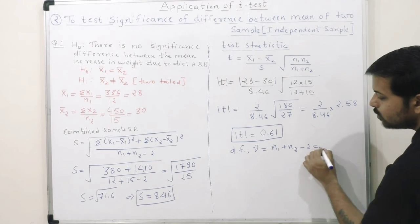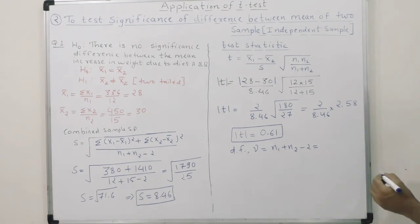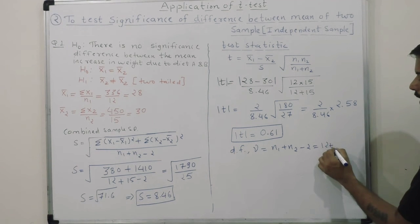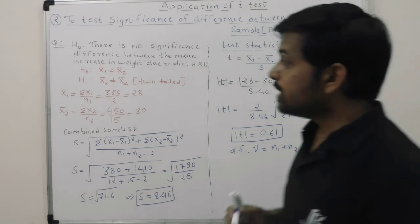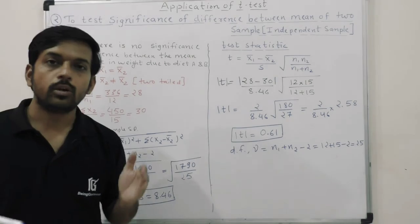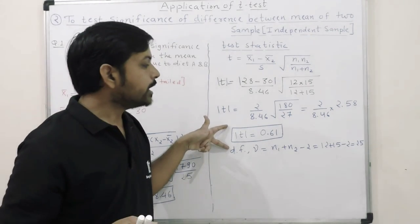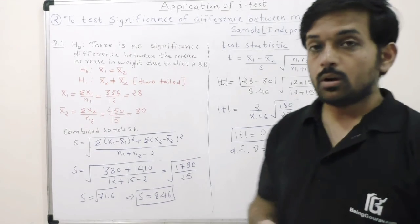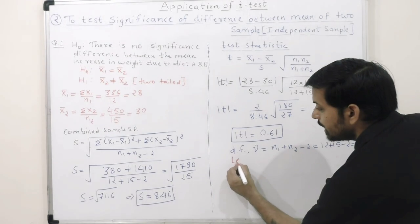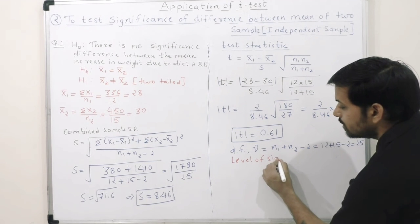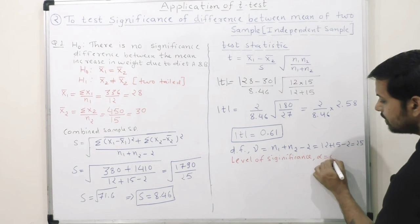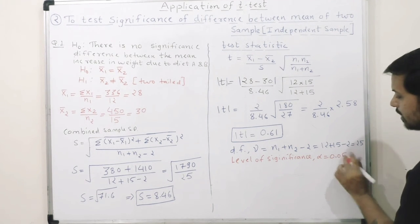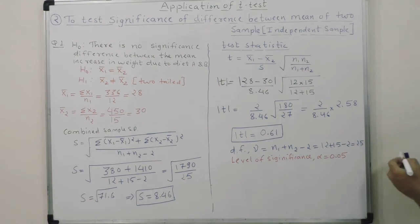For the degrees of freedom: n1 plus n2 minus 2, where n1 is 12 and n2 is 15, gives us 12 plus 15 minus 2 equals 25 degrees of freedom. Now I will make a decision on whether to accept or reject the null hypothesis. The calculated t value is 0.61, at 25 degrees of freedom with a level of significance of 5 percent (alpha = 0.05).